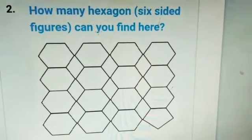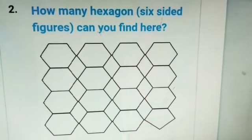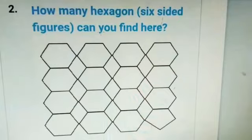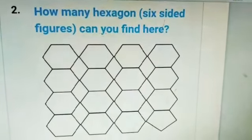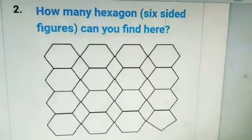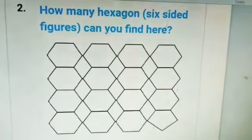Our second question is: how many hexagons can you find here? A hexagon has six sides, and a regular hexagon has equal six sides.